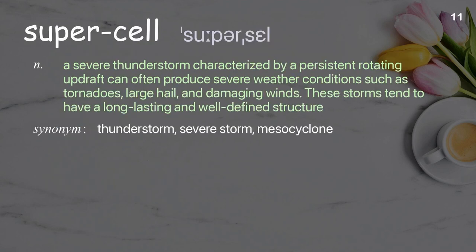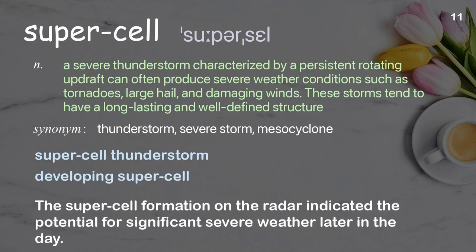Supercell: A severe thunderstorm characterized by a persistent rotating updraft, can often produce severe weather conditions such as tornadoes, large hail, and damaging winds. These storms tend to have a long-lasting and well-defined structure. Examples: Supercell thunderstorm. The supercell formation on the radar indicated the potential for significant severe weather later in the day.